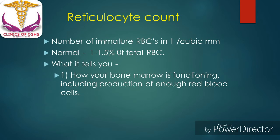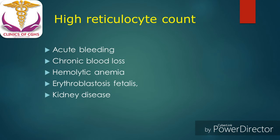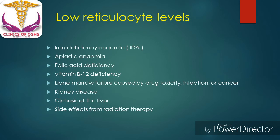The next index is the reticulocyte count. It is the number of immature RBCs in peripheral blood, normally 1 to 1.5% of total RBC count, and it tells us the normal or abnormal functioning of the bone marrow. High reticulocyte count is seen in acute bleeding, chronic bleeding, hemolytic anemias, and kidney diseases. Low reticulocyte count is seen in nutritional deficiencies such as iron, folic acid, or vitamin B12 deficiency, bone marrow failure caused by drug toxicity, infection, cancer, kidney diseases, and cirrhosis of the liver.